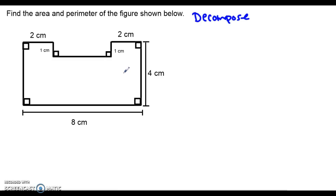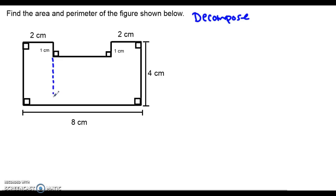There are a couple of different ways that we could do this. For example, we could make two vertical cuts and get three rectangles. We could also make two horizontal cuts instead and get three rectangles. It does not matter how you choose to decompose or cut up your figure as long as you're able to find the area of each shape that you cut it up into. I'm going to decompose the figure into three rectangles by using two vertical cuts.